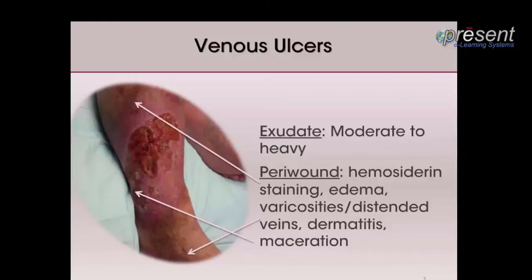The peri-wound tissue may also show edema, varicosities or distended veins, possibly dermatitis, and maceration if the exudate is not adequately managed.